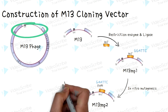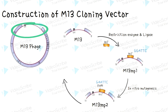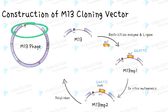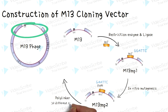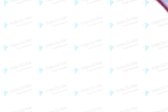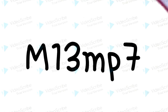The next step is to introduce additional restriction sites into the lacZ gene. This can be achieved by adding a polylinker — a short DNA sequence that contains two or more different sites for cleavage by restriction enzymes. Polylinkers are introduced into the vectors to make cloning easier by providing sites that allow the cloning of DNA. Finally, we get our product, which we call the M13 MP7 vector.